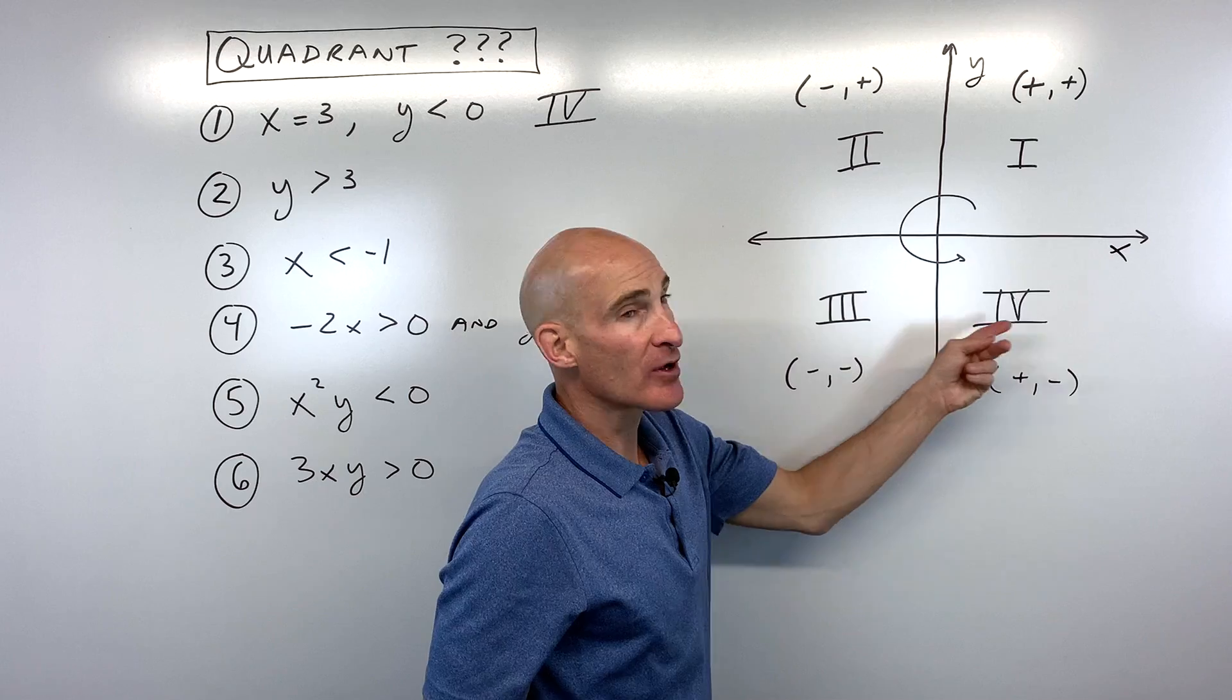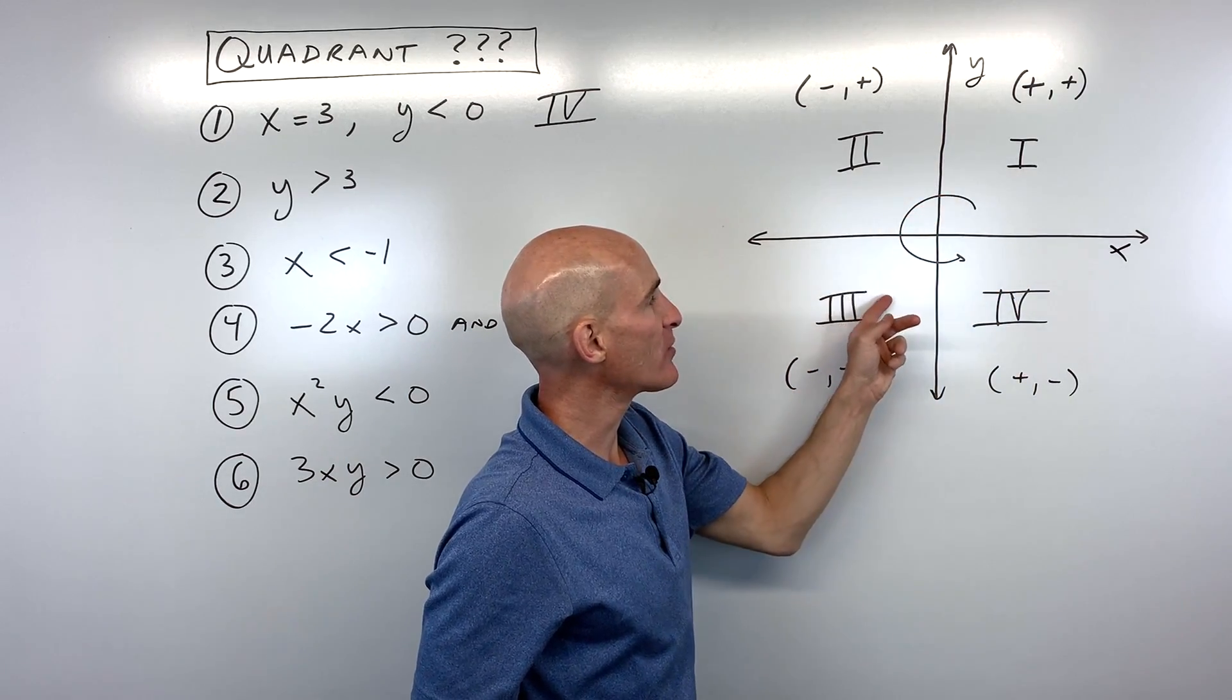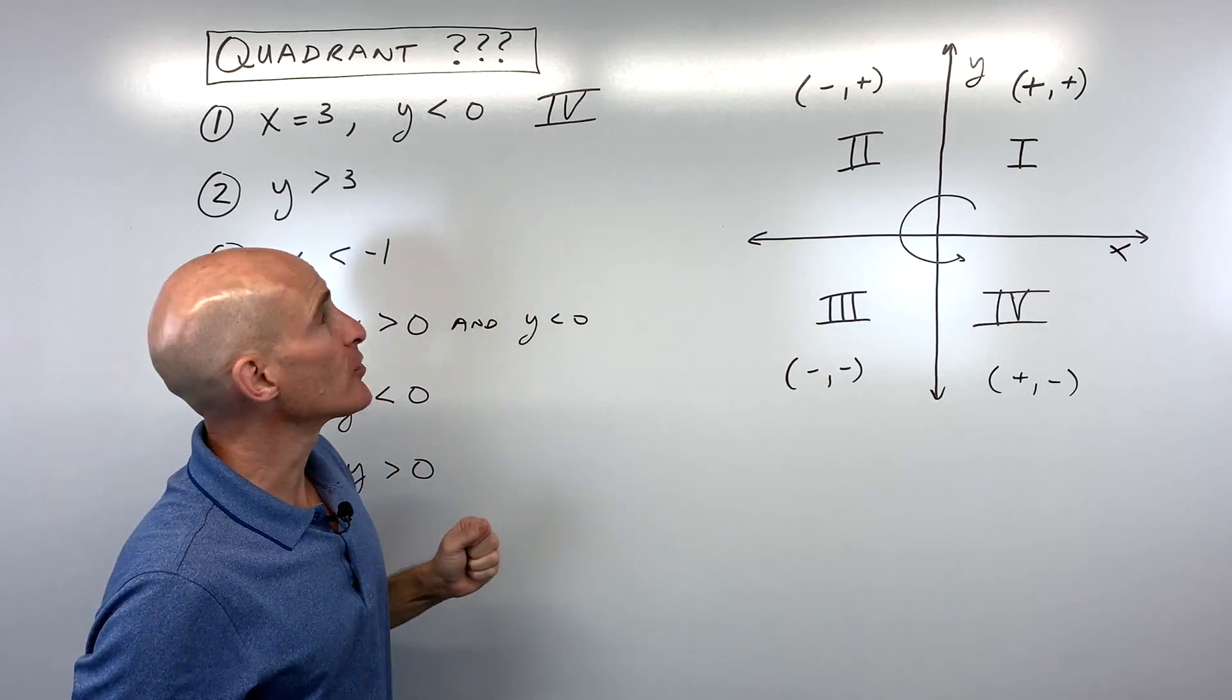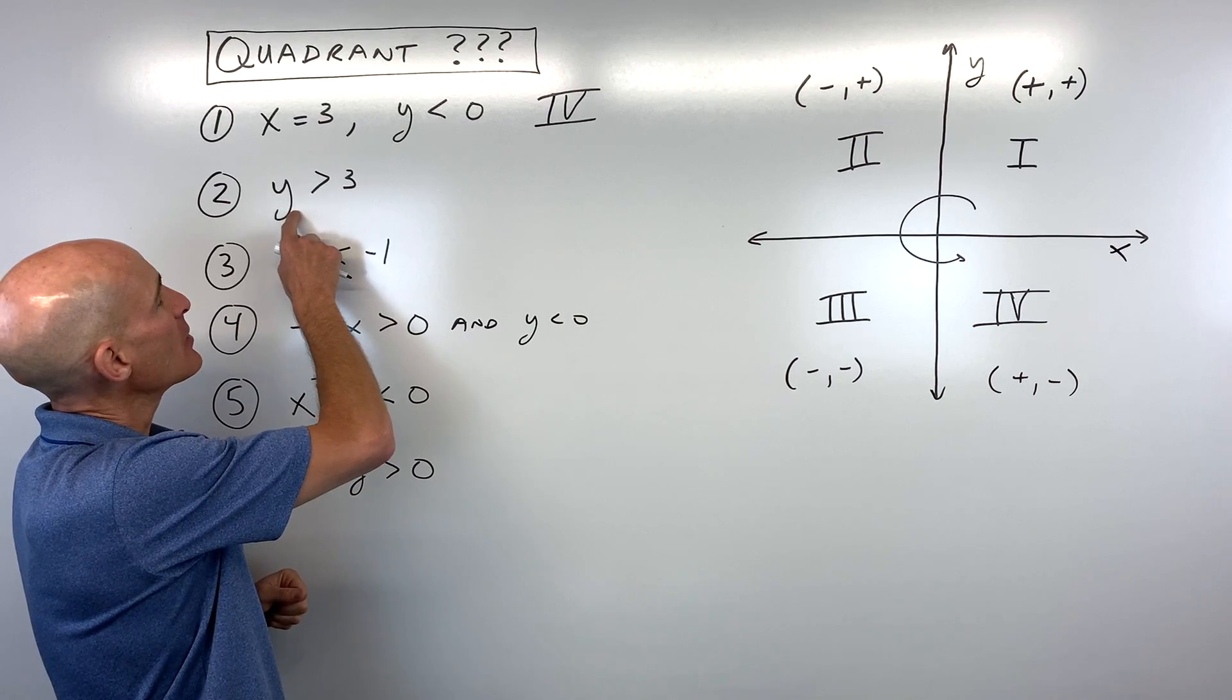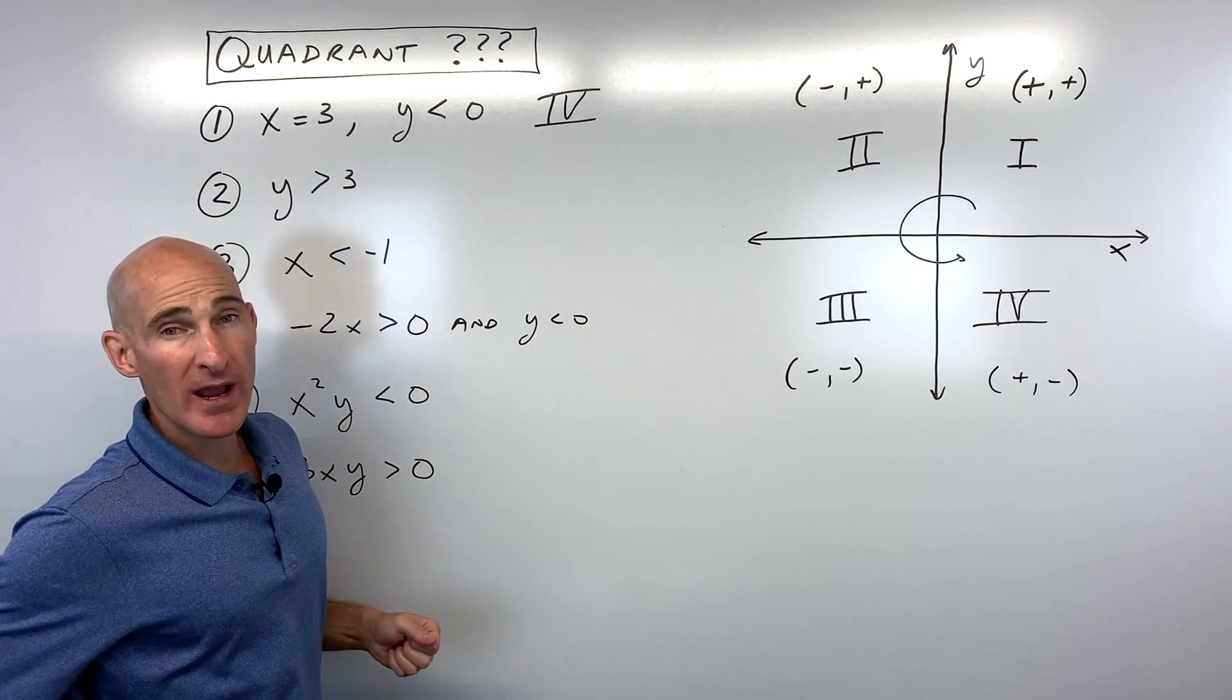Remember, the quadrants go in this counterclockwise fashion, one, two, three, four. Let's look at another example, see if we can do this one. Here, it just tells us that y has to be greater than three.